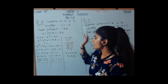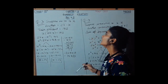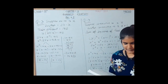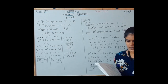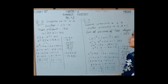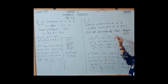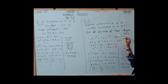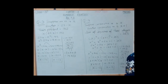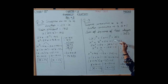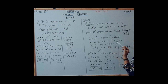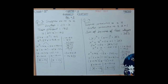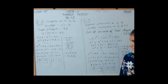And if one number is 13, then the other is 14. In question number 4, we have to find two consecutive positive integers whose sum of squares is 365. Suppose one integer is x and the other is x plus 1. Then x squared plus (x plus 1) whole squared equals 365. Expanding using the identity (a+b)² = a² + 2ab + b², we get x squared plus x squared plus 2x plus 1 equals 365.